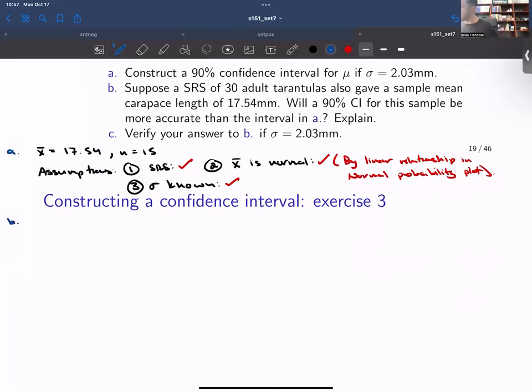Suppose a simple random sample of 30 adult tarantulas, or sorry, I should probably finish part A, right? So now we want to construct the CI.